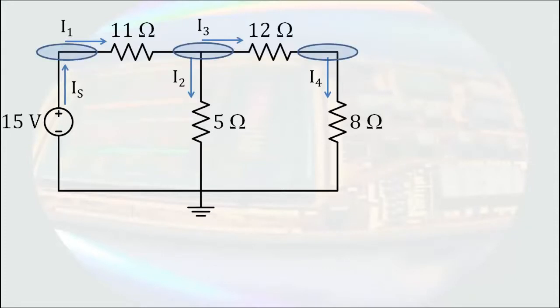Since all of the unknown currents are already included in the equations we'll write for these three nodes, writing an equation for the bottom node would provide no new information and would not help us solve the problem.